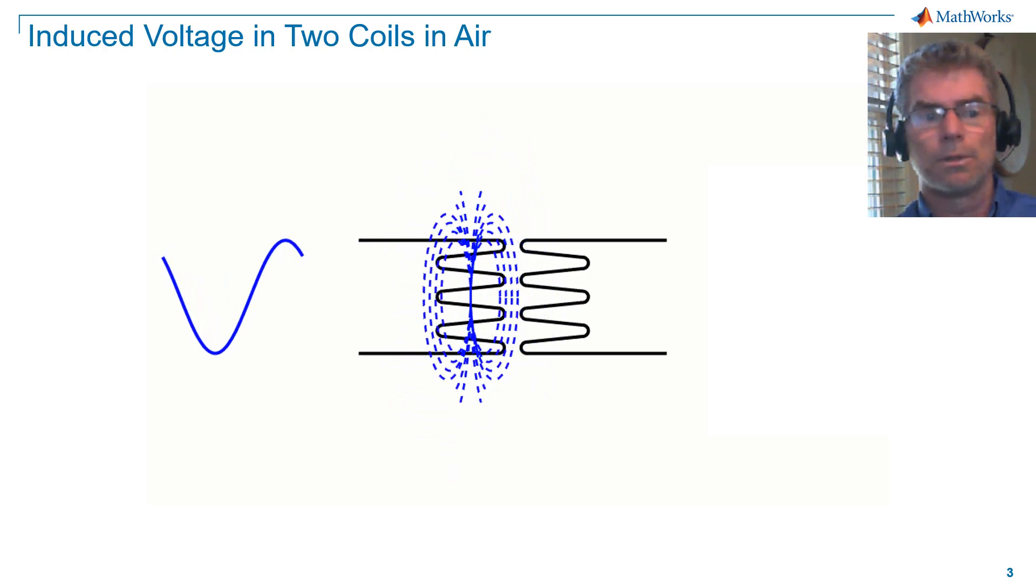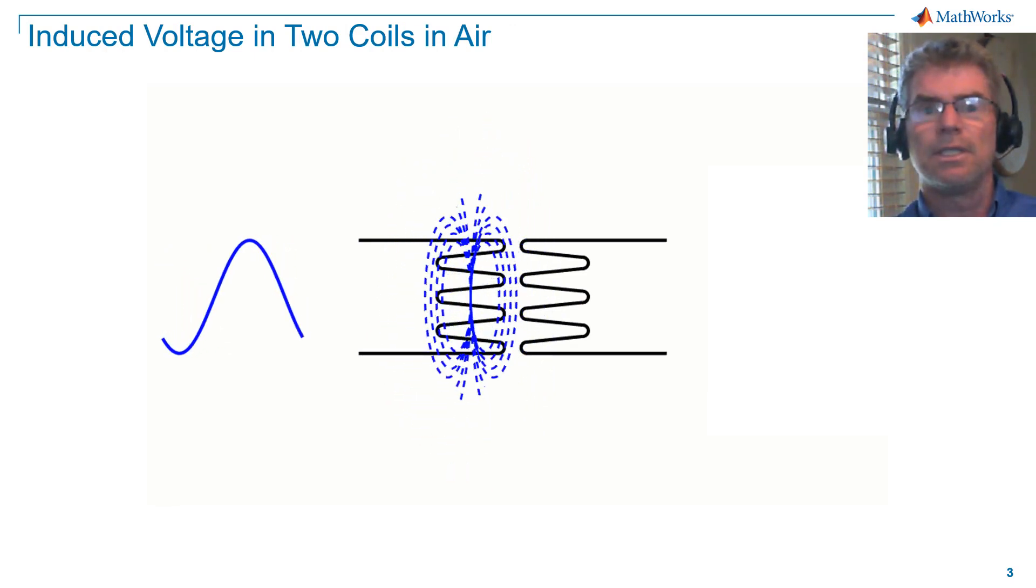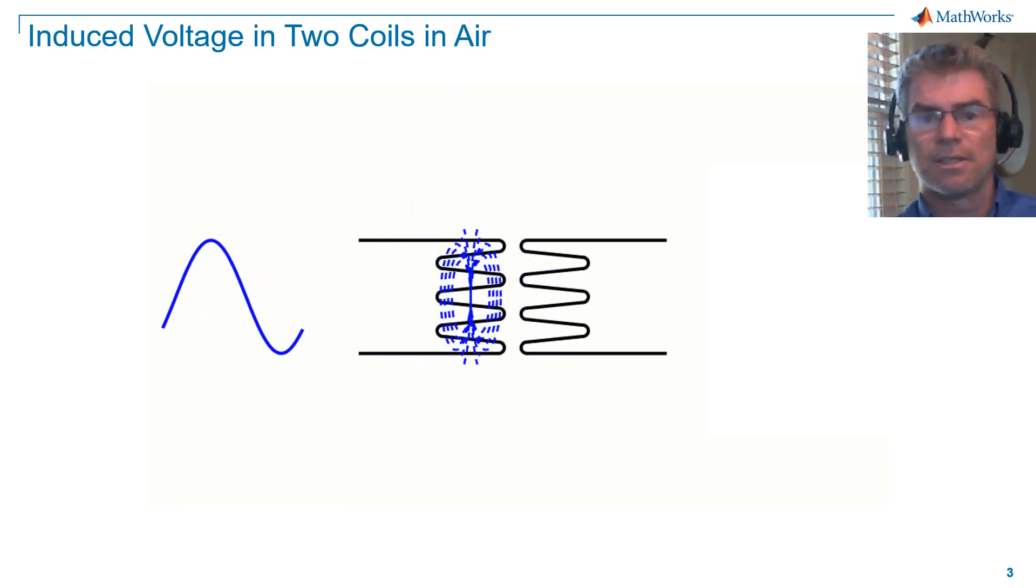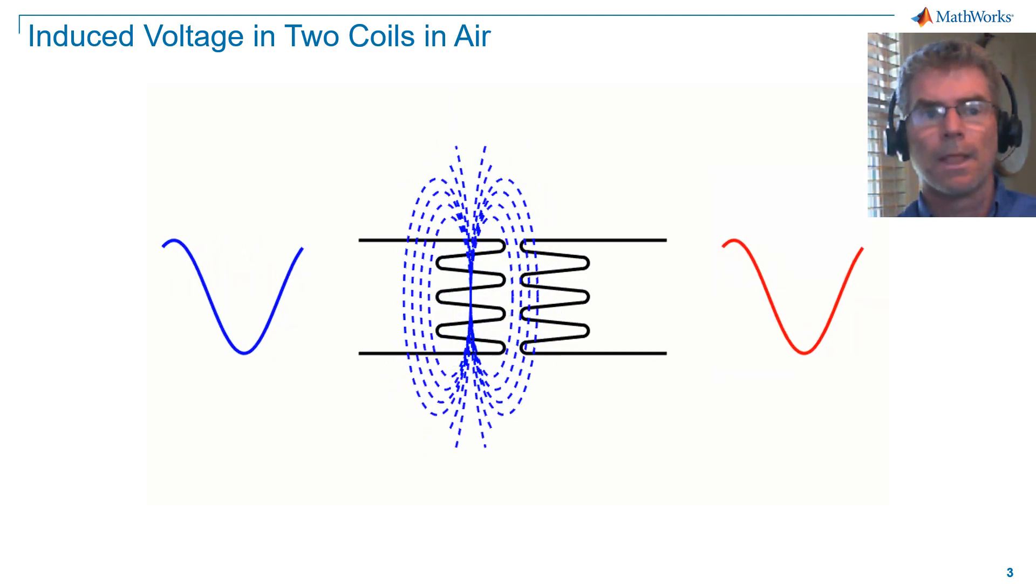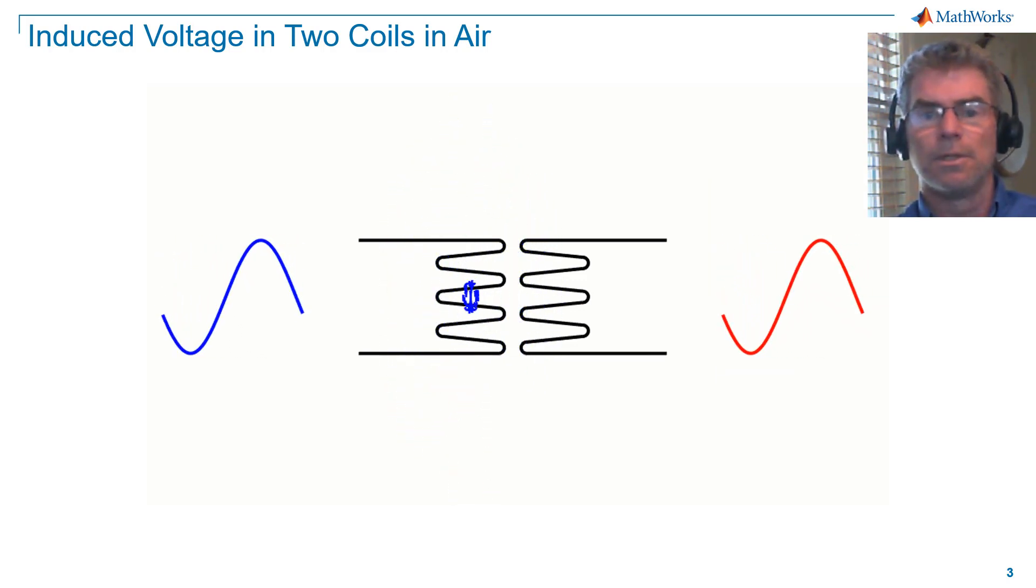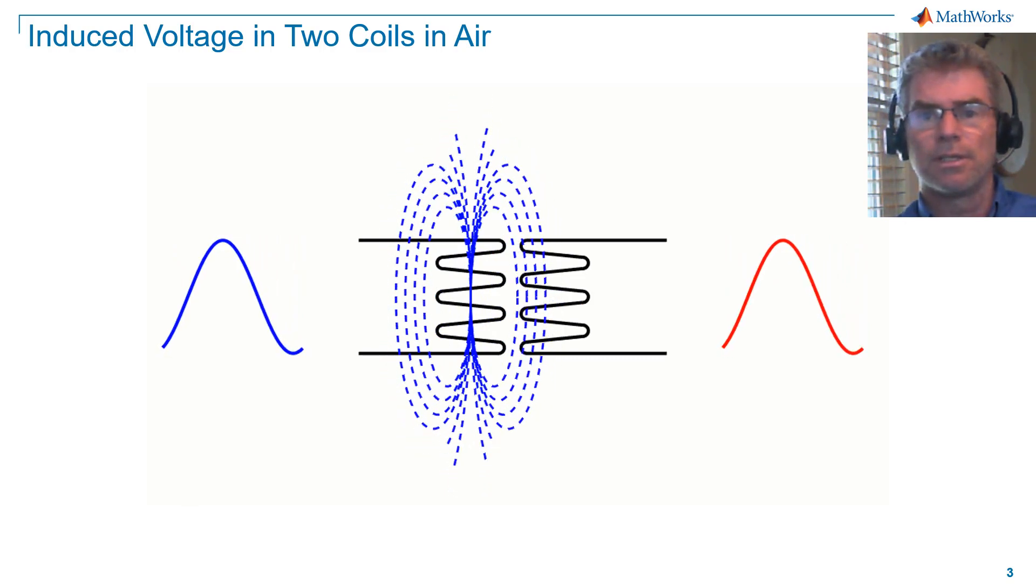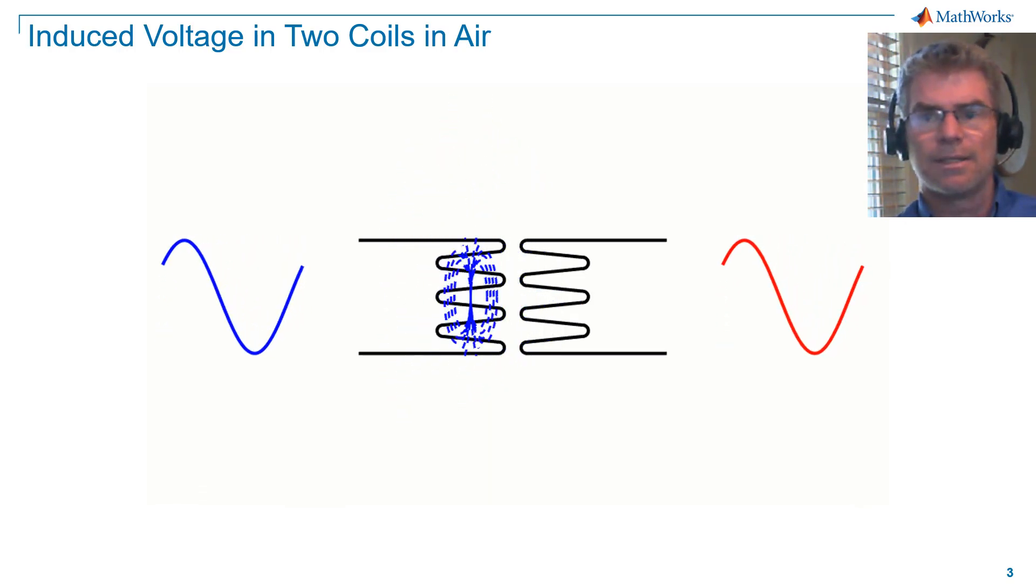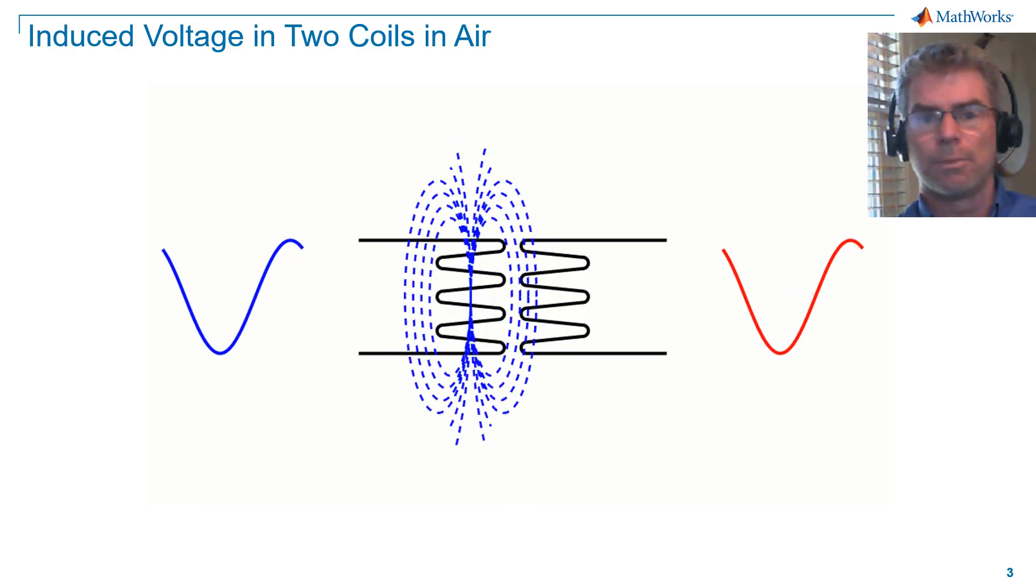If we place a second coil close to the first coil, you will see that the magnetic flux lines intersect the second coil. Because we have a moving magnetic field cutting through the second coil, a voltage is induced in the second coil, as described by Faraday's law of electromagnetic induction.